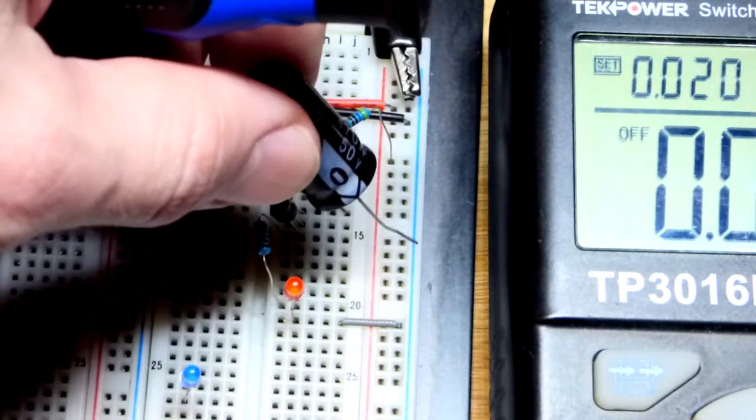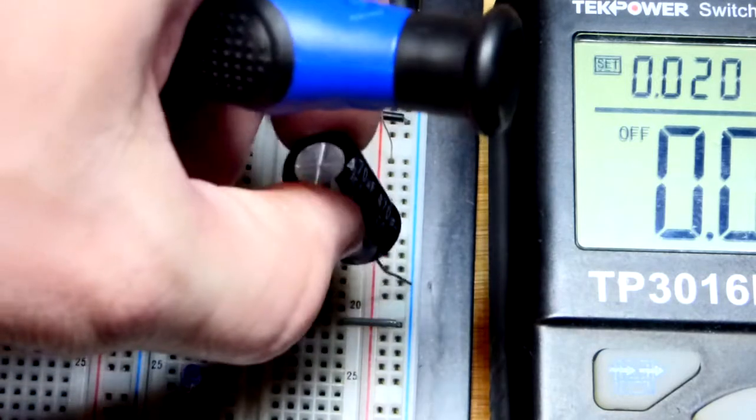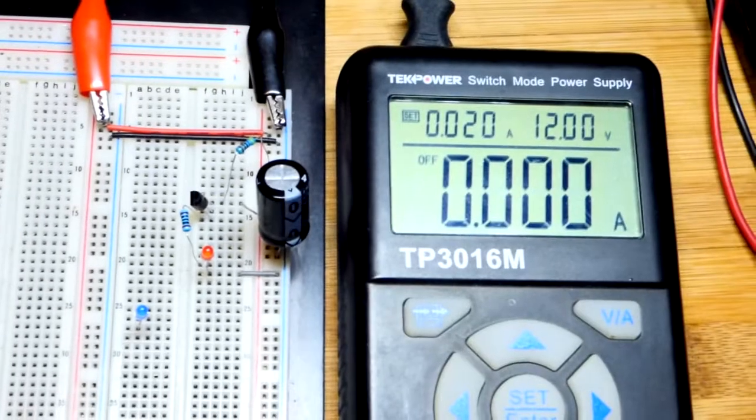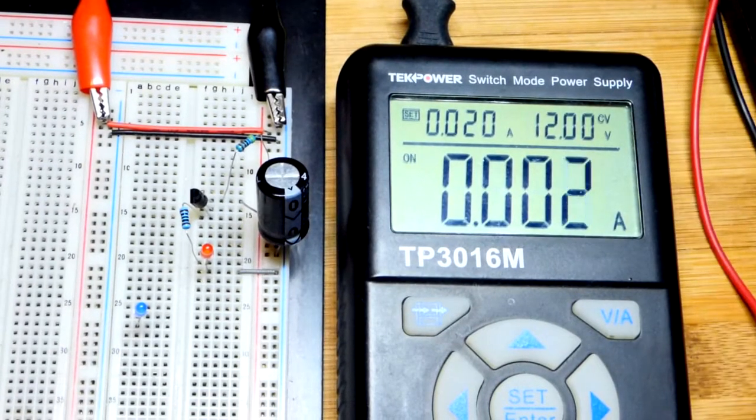So we will plug that in. It's polarized. That side has to be more negative. And there we go. So let's back up. Pretty simple circuit. And turn the power on.